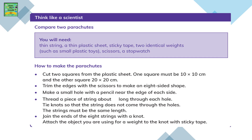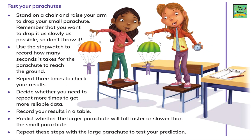Make a small hole with a pencil near the edge of each side. Thread a piece of string about 15 to 20 cm long through each hole. Tie knots so that the string does not come through the holes. The strings must be the same length. Join the ends of the 8 strings with a knot. Attach the object you are going to use for a weight to the knot with sticky tape.